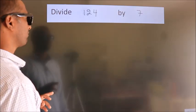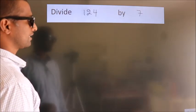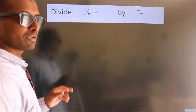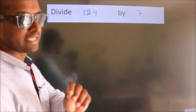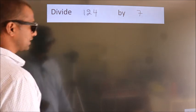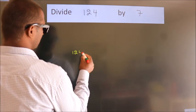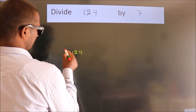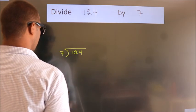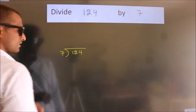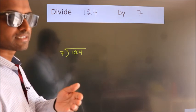Divide 124 by 7. To do this division, we should frame it in this way: 124 here, 7 here. This is your step 1.